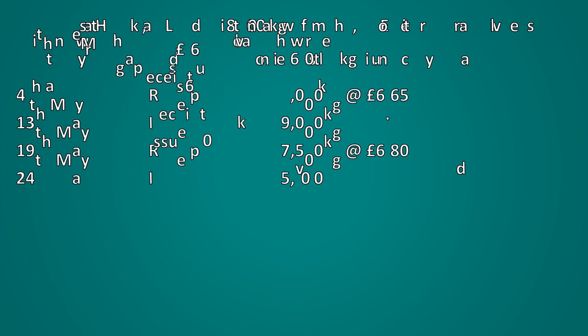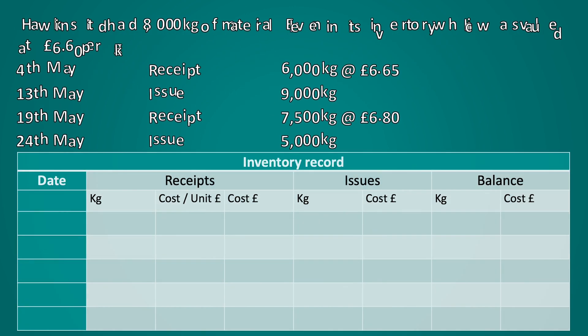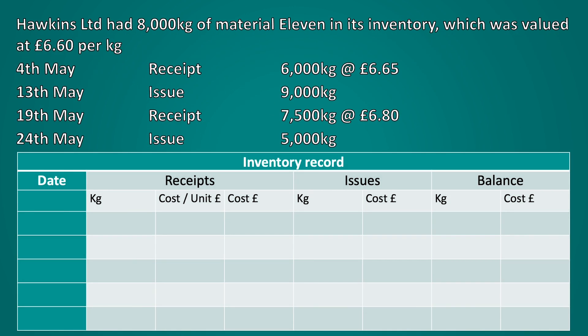We start off with the opening balance at the beginning of the month. This would be the 8,000 kilograms valued at £6.60 per kilogram, giving us a total value of £52,800.